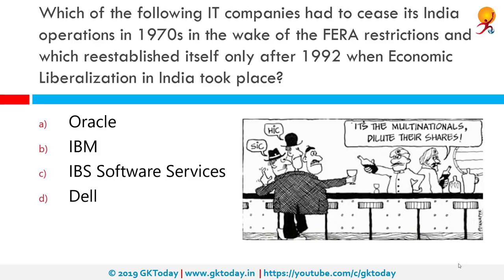Which IT company had to cease its India operations in the 1970s due to FERA restrictions and re-established itself only after 1992 when economic liberalization took place? The correct answer is IBM. FERA is the Foreign Exchange Regulation Act, legislation passed in India in 1973 that imposed strict regulations on certain payments, dealings in foreign exchange and securities, and transactions with an indirect impact on foreign exchange and import-export of currency.